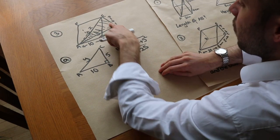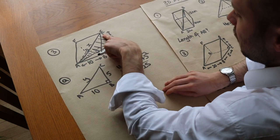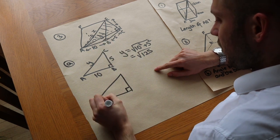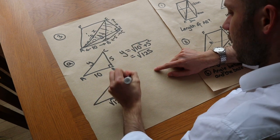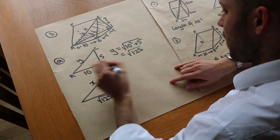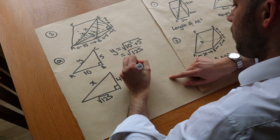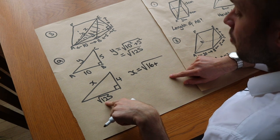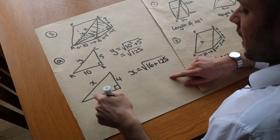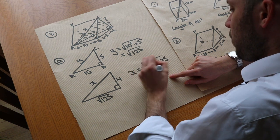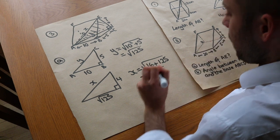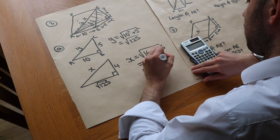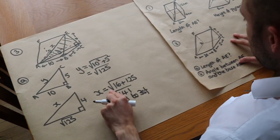I'll keep the answer as √125 since we may need to square it later. Drawing the height triangle separately, we have √125 at the bottom, height 4, and hypotenuse x (length AE). So x = √(4² + (√125)²) = √(16 + 125) = √141, which is approximately 11.9 to 3 significant figures.